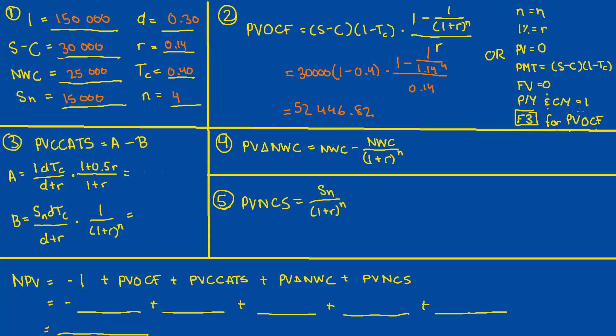So this is intended to represent the Casio FX 9860 screen or something similar where you would enter in the values as shown. So for example, for N, you would just enter in the periods and for the I percent, you would enter in the discount rate. And for payment, you would enter in S minus C times 1 minus TC.